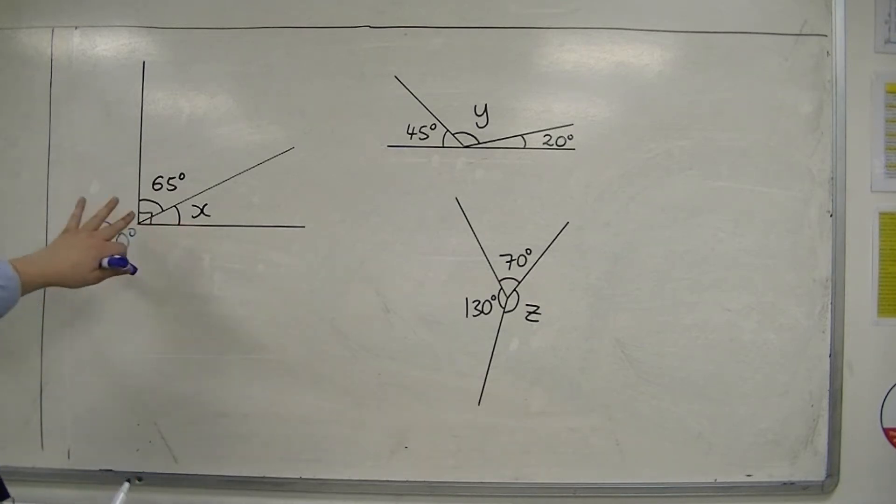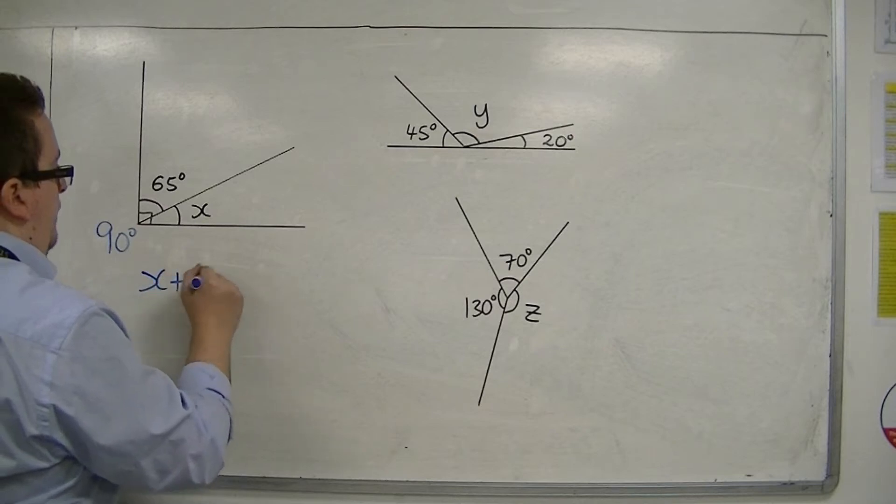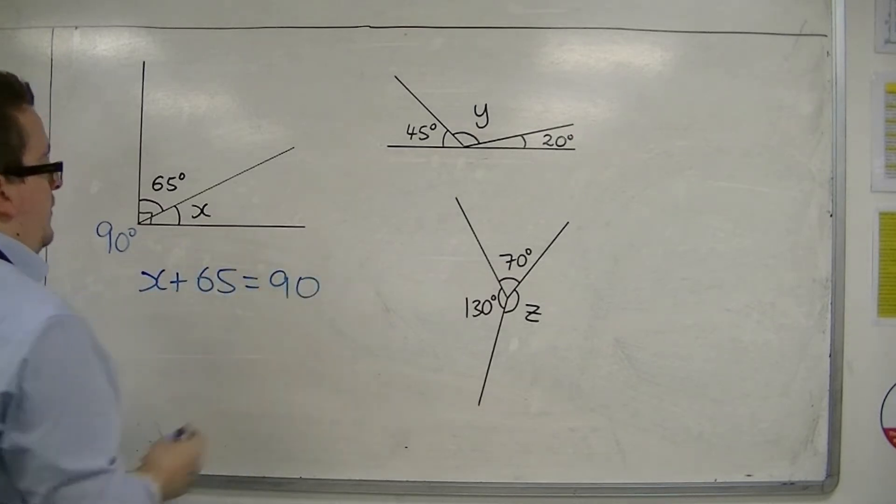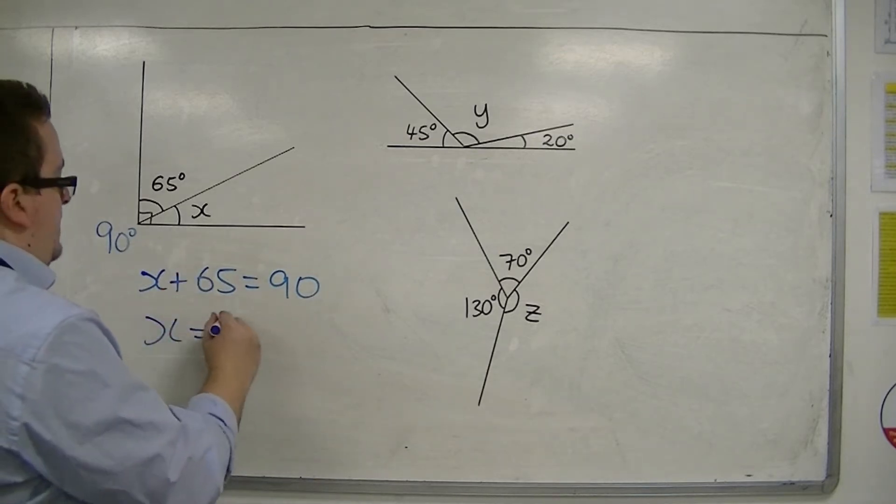So if they both add up to 90 degrees, then we can work out the missing angle. x plus 65 must be 90. So, take the 65 from 90, leaves you with 25 degrees. So x must be 25 degrees.